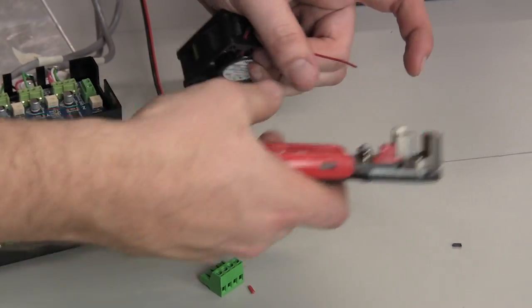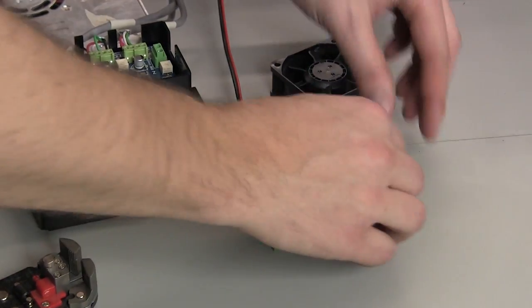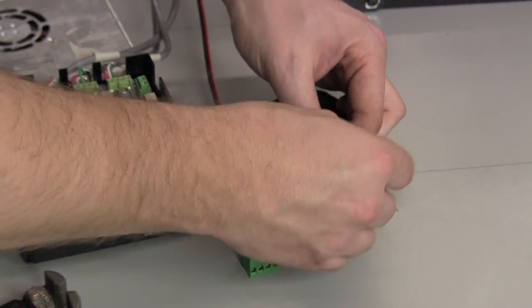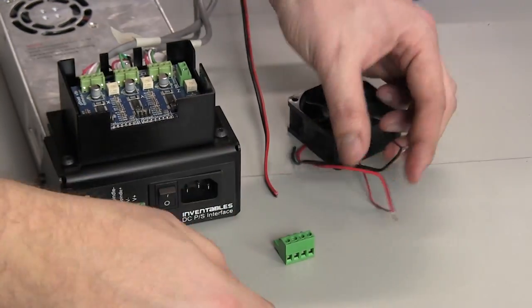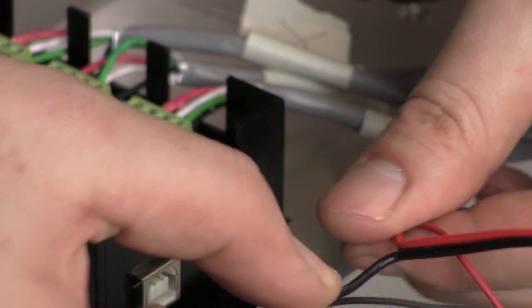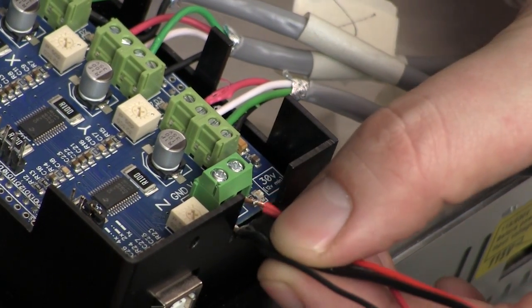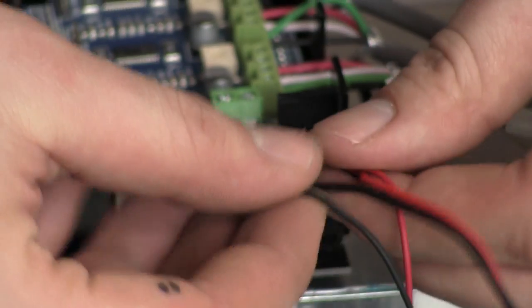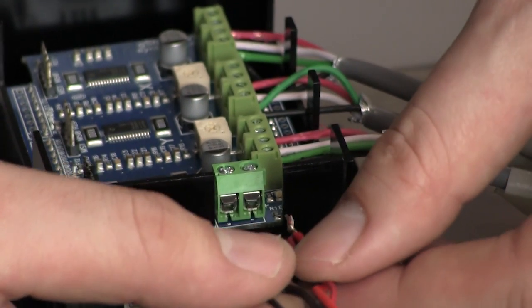Do the same for the 24 volt fan. Twist the black wire of the 24 volt fan with the black wire from the zip wire and do the same with the red. Put these twisted pairs into the power terminal on the G-Shield. The board is marked GND and V-MOTE. Wire the black pair into GND and the red pair into V-MOTE.